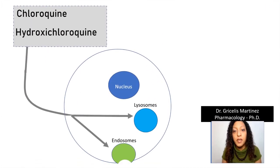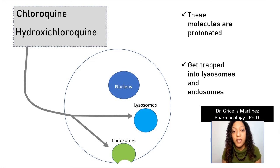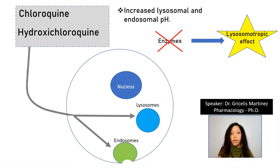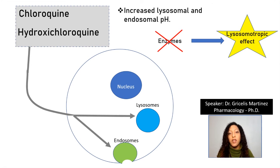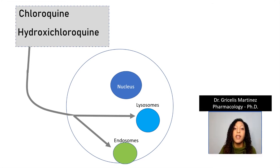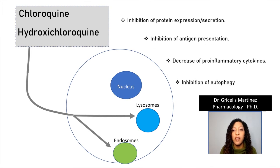These molecules enter into cells and accumulate into lysosomes and endosomes, get protonated, and get trapped, increasing the cellular pH. Consequently, the enzymes won't work properly. This is called the lysosomotropic effect, and it induces all the effects we show here in our review.